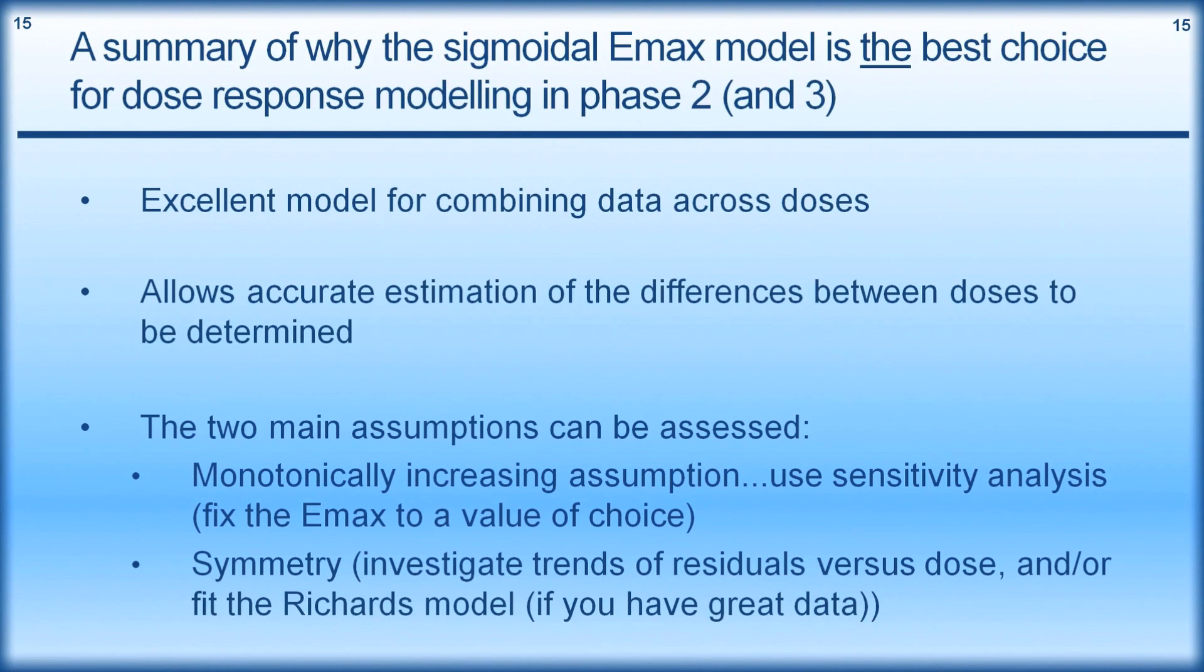So summary of why the sigmoidal Emax model is the best choice for dose response modelling in phase 2 and phase 3 I would say as well. I think it's an excellent model for combining data across doses. Importantly it allows an accurate estimation of the differences between doses which is really going to help us when we're trying to talk about the utility of different doses versus each other in terms of efficacy and safety. The two main assumptions can be assessed. So the monotonically increasing assumption can be assessed using sensitivity analysis. Fixing Emax to a value of choice is one solution there. And the symmetry if we want to investigate the trends of the residuals versus dose to look for any lack of fit across the dose range. Or indeed if your data is really really great you could consider estimating the Richards model. So I hope I've clearly demonstrated why the sigmoidal Emax model is a very useful model for dose response analysis.